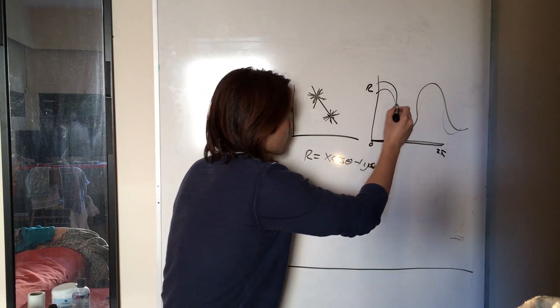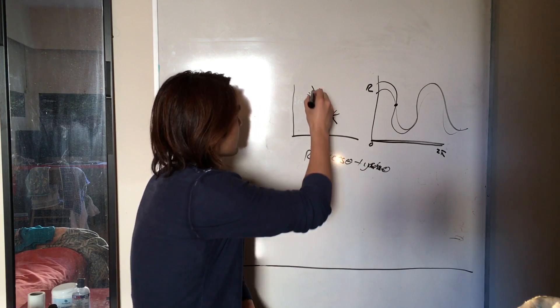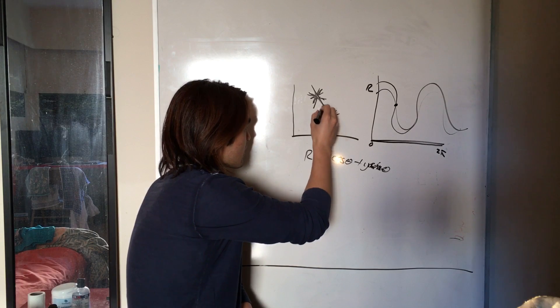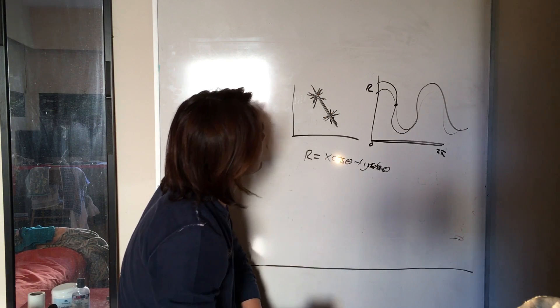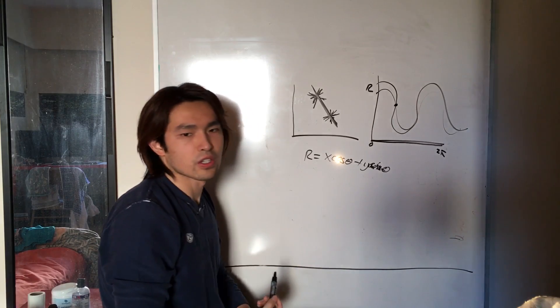This intersection tells us that there is a line here. That's how we know that there is this line. And that is line detection for Hough transform.